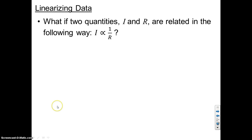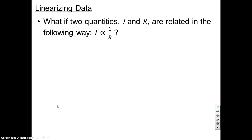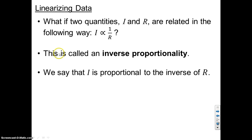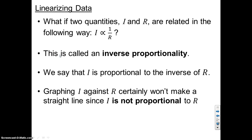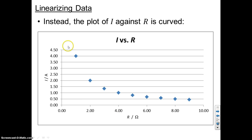That's a pretty easy example — there's nothing we have to do because the data is already linear. But what if we have something like current I and resistance R related by an inverse proportionality, where I is proportional to 1/R? If we try to plot I against R, that definitely should not form a straight line, because I is not proportional to R directly. What we get is a curved graph that slopes downward — that's what we get for an inverse relationship.